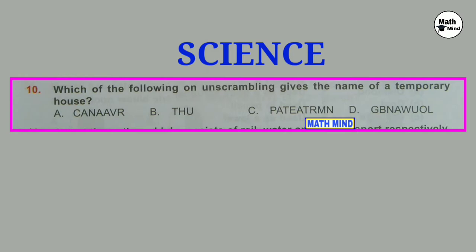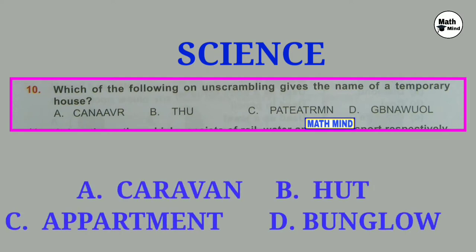Question number 10: Which of the following on unscrambling gives the name of a temporary house? Unscrambling the letters, we get option A: Caravan. Option B: Hut. Option C: Apartment. Option D: Bungalow. Hut is a kaccha house but it is a permanent house. Similarly, apartment and bungalow are pakka and also permanent houses. So correct option is A: Caravan. It is a vehicle which contains bed and cooking equipment so that people can live. It is a temporary house.